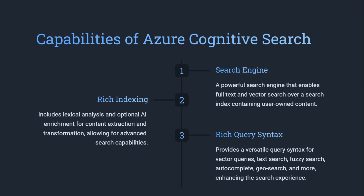Capabilities of Azure Cognitive Search. It has a search engine, basically a version of Lucene, and then it has rich indexing capabilities. It doesn't have an inbuilt indexer, so it's up to us to push whatever data we want. It also has a rich query syntax which can be used for text search, fuzzy search, or vector queries.